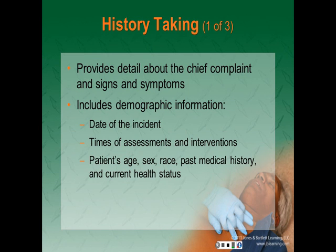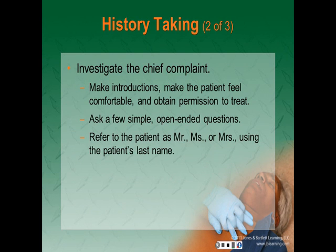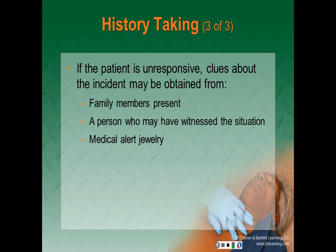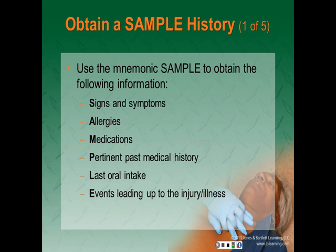History taking provides detail about the patient's chief complaint and an account of the patient's signs and symptoms. Document the date of the incident, all times of assessments and interventions, the patient's age, sex, and race, past medical history, and current health status. Investigate the chief complaint and history of present illness. Make introductions, make the patient comfortable, and get permission to treat. Ask open-ended questions and refer to the patient using their proper last name. Use eye contact, body position, and language to encourage the patient to speak. We use the SAMPLE history mnemonic: Signs and symptoms, Allergies, Medications, Pertinent past medical history, Last oral intake, and Events leading up to the incident.